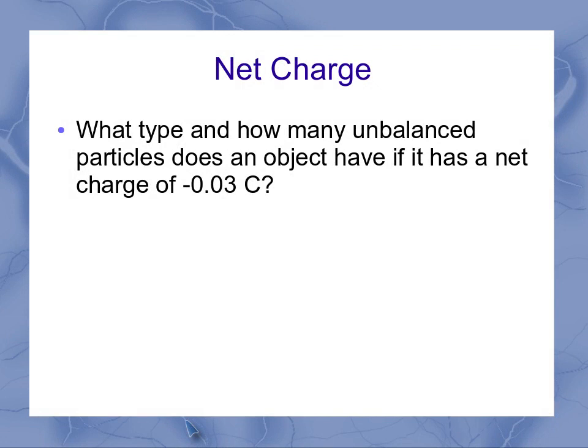If I want to look at a larger example, I can talk about what type and how many unbalanced particles does an object have if it has a net charge of minus 0.03 coulombs. Just a little fraction of a coulomb. I start with my basic equation here, but now I want to rearrange it to solve for N, the number of unbalanced charges.